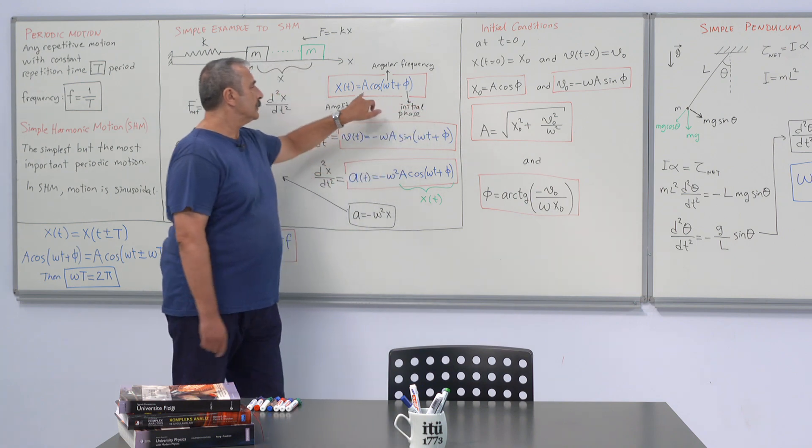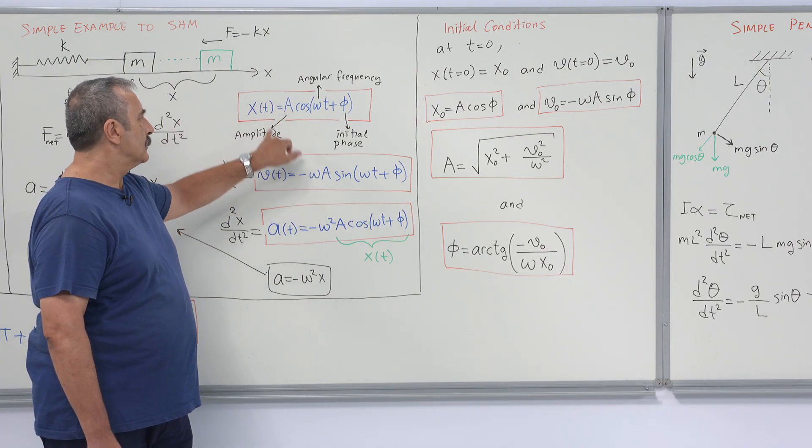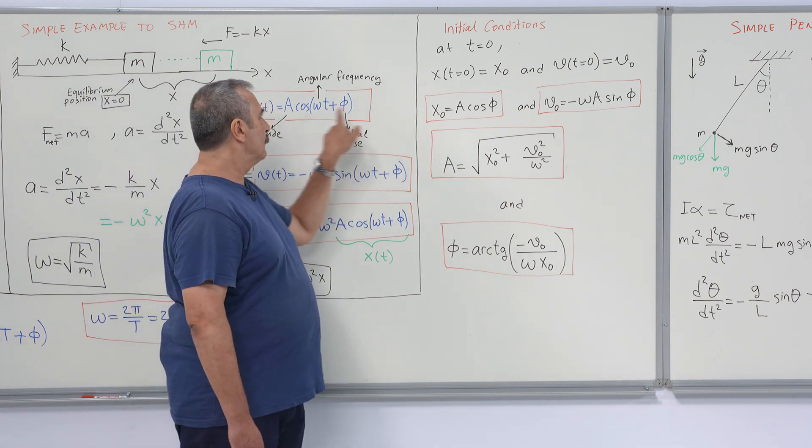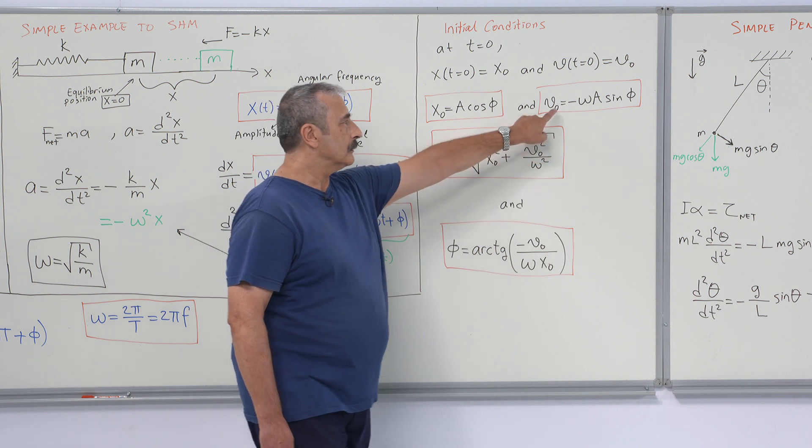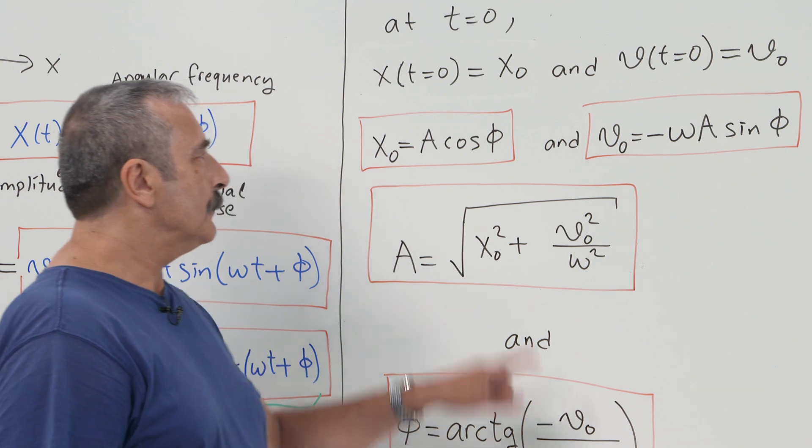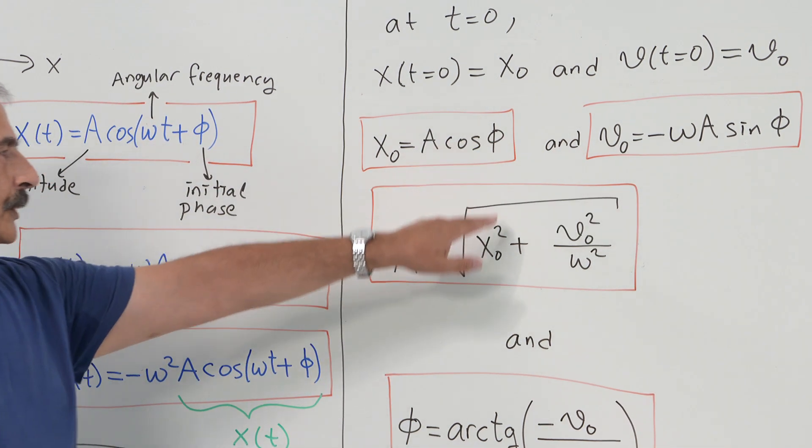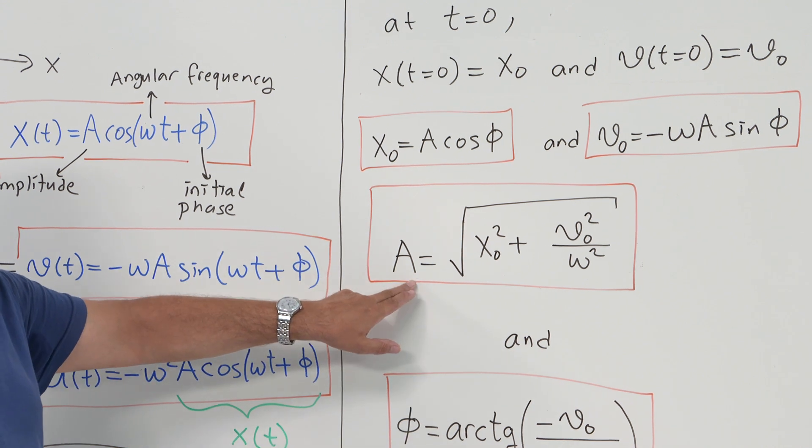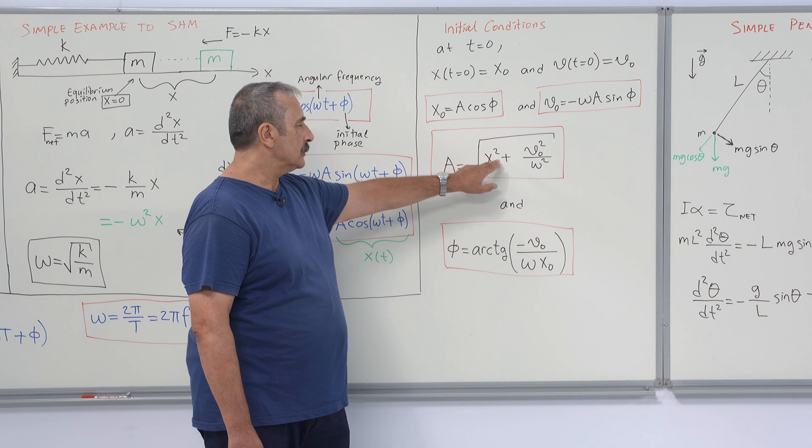Inserting into the displacement and velocity formula at t equals 0, we obtain x naught equals A times cosine phi and v naught initial velocity equals minus omega A times sine phi. We have two unknowns and two equations. Solving them together, we obtain amplitude and initial phase as functions of initial conditions.